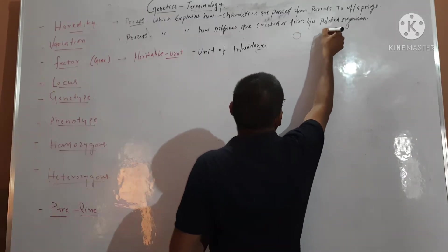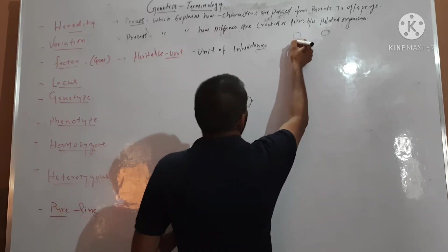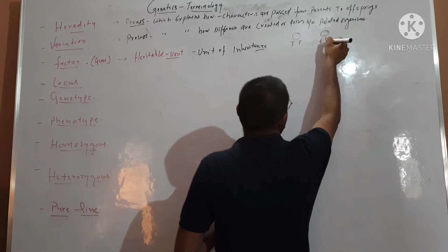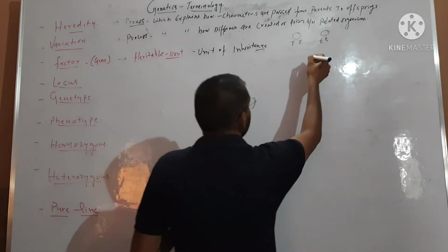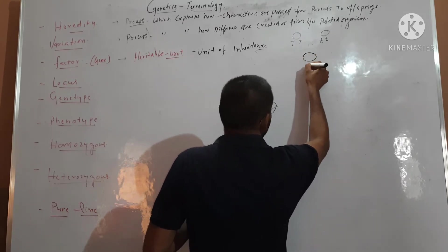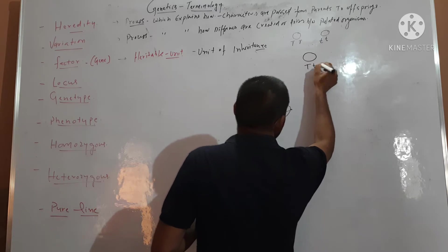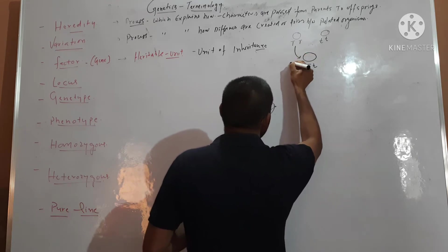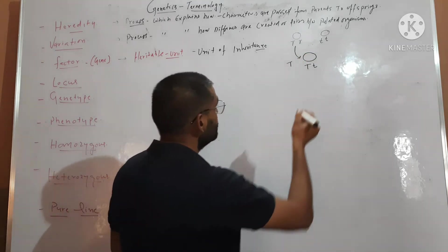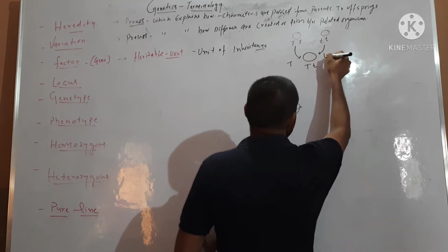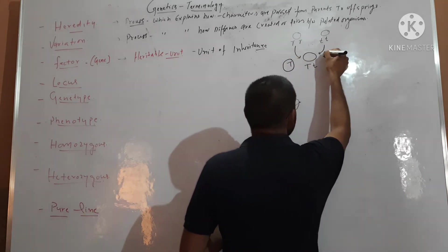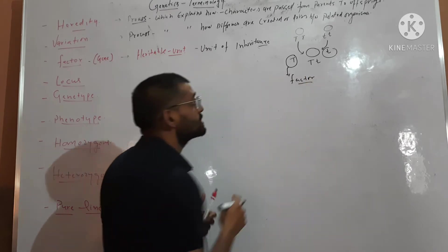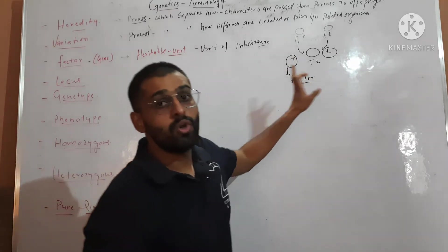So these are the parents — one parent is tall, another is dwarf. So this offspring will be tall. From here it acquired the unit that is capital T, and from there it acquired the unit that is small t. So this capital T and small t here is a factor — a factor that is transmitted from parents to offspring.